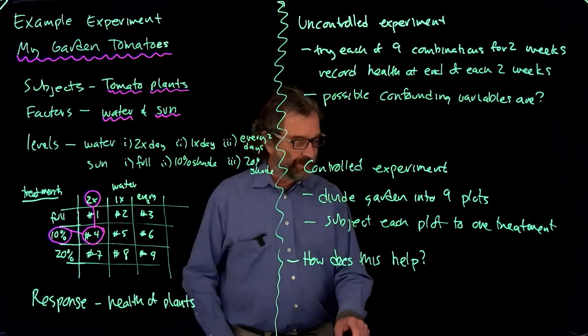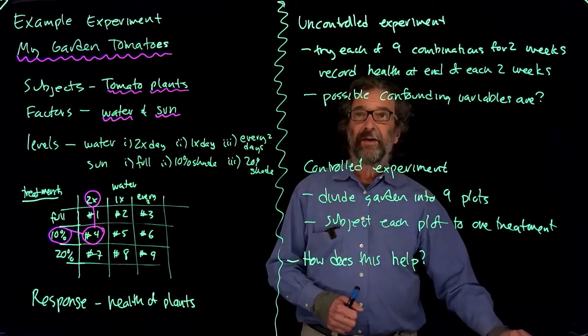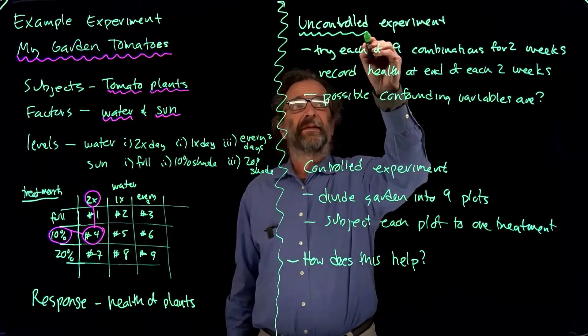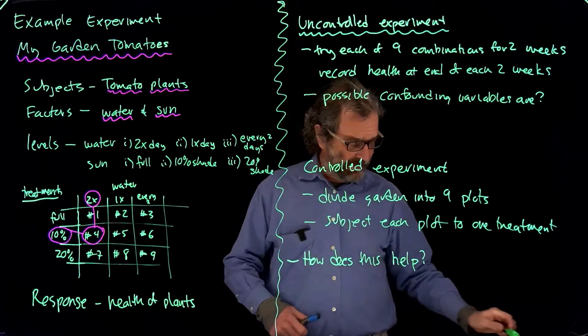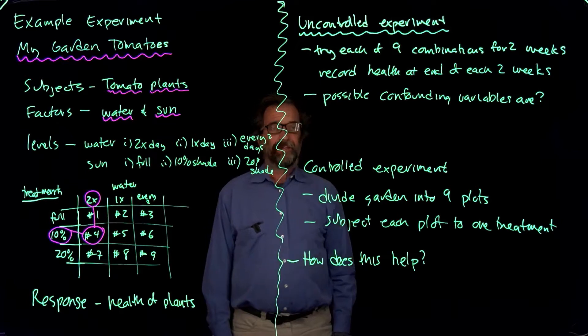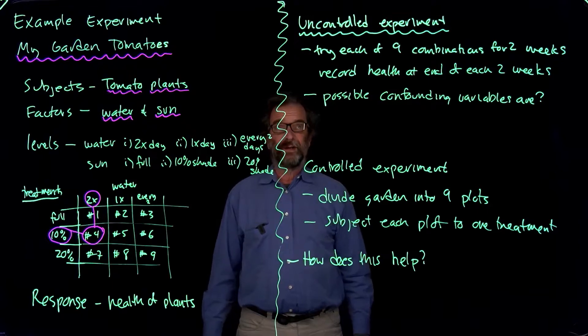So now we're figuring out, how can we carry out the experiment? Well, there's two ways. One way to carry it out is what you might call an uncontrolled setting. Uncontrolled means there might be other variables that are impacting the results, that might be causing us to report a certain level of water and sun as being better than another, besides just water and sun. There's other things that are varying that we're not controlling for.